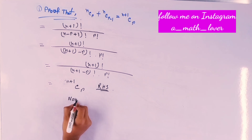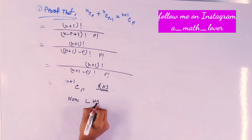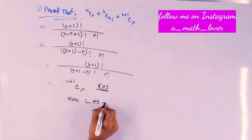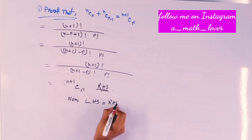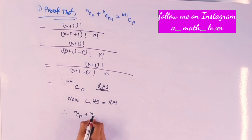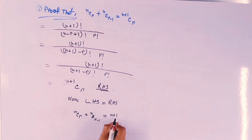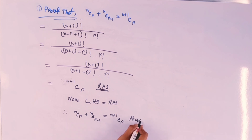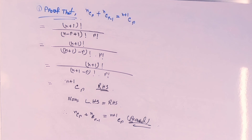So we can write LHS equals to RHS. So the question is proved, and we can say nCr plus nC(r-1) equals to (n plus 1)Cr is proved. That is true. Thanks for watching this video.